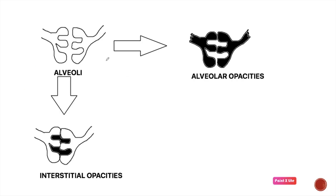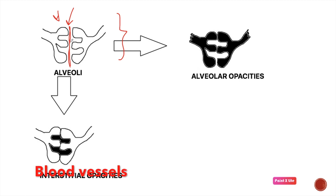First of all, look at the basic microscopic structure of the lungs. Here we can see the alveoli on both sides and the interstitium in between. Within the interstitium, there run the blood vessels, and here the gaseous exchange between the alveoli and the interstitium takes place. In a radiograph, the opacities are basically of two types.